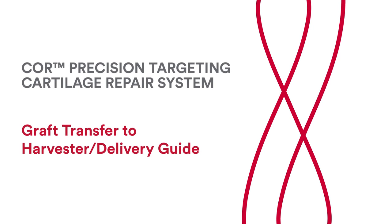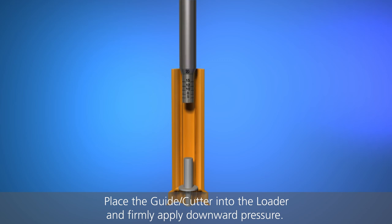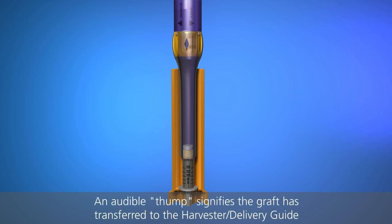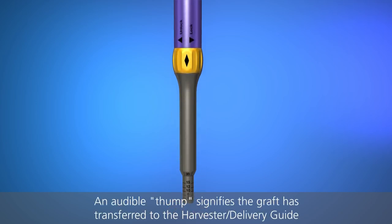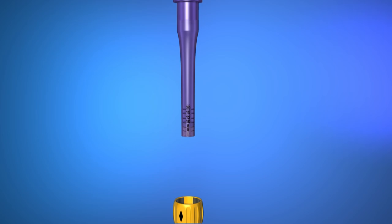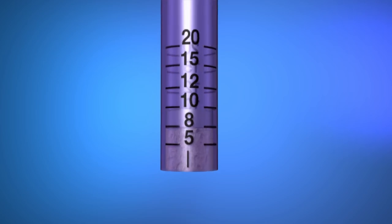Graft transfer to harvester delivery guide. On a firm surface, insert the guide cutter into the graft loader. Firmly push the guide cutter until it makes contact with the bottom of the loader. Remove the cutter from the guide by twisting the bayonet ring to the unlock position. Inspect graft. Keep it within the delivery guide until transplant.